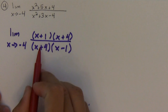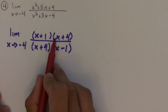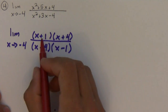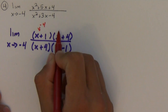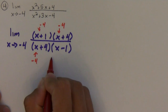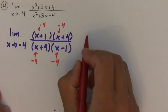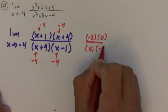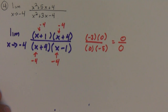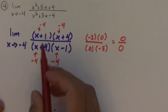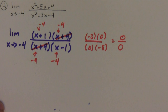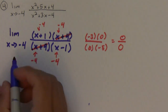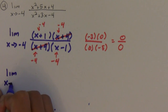Notice that if you plug in negative 4 on the numerator you would get a zero there. Plugging in negative 4 throughout, we get negative 3 times 0 over 0 times negative 5 — this is an indeterminate form, 0 over 0, which means we have to do more work. Notice that if we cancel out the x plus 4's, we get a function that's now continuous at negative 4, so we can substitute the value.